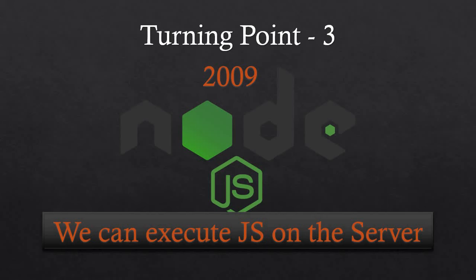With Node.js, a new competitor came to server-side programming languages. Java is multi-threaded, C# is multi-threaded, and most other programming languages are multi-threaded. The specialty of Node.js is that it is single-threaded and asynchronous. That is why JavaScript in the server side became so compelling, and most people started using JavaScript on the server side as well.